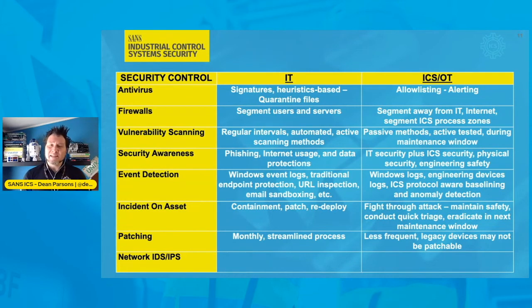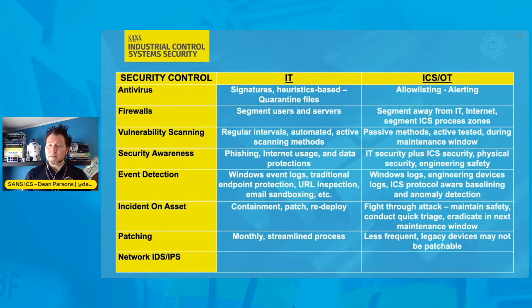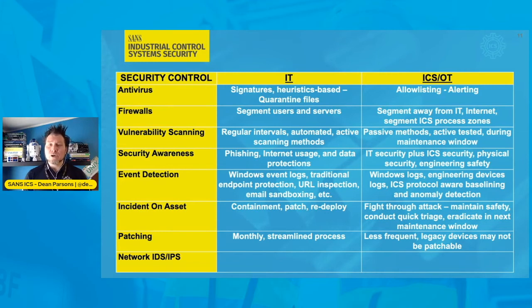Patching in IT has been done for decades very well, and it's a really refined, streamlined process that actually happens regularly, likely every month or every 30 days. In the ICS, it's much less frequent than that. There are legacy devices that may not be patchable, and there are workarounds that may need to be deployed. The frequency is a lot lower than in IT — it could be once a quarter, depending on the different kinds of environments and the different components that may be patchable or not.